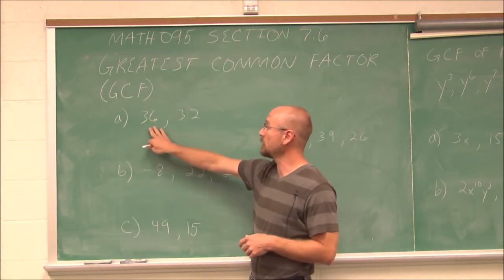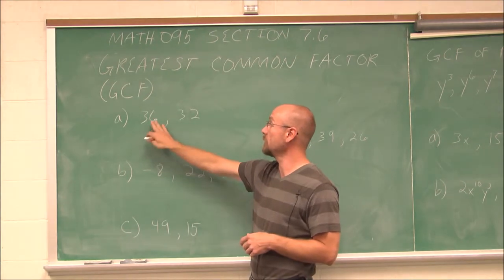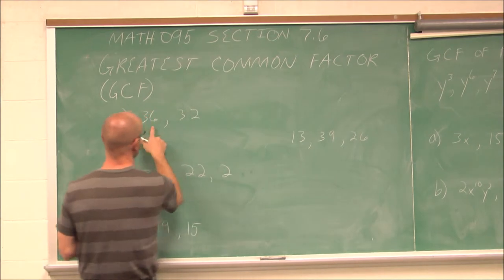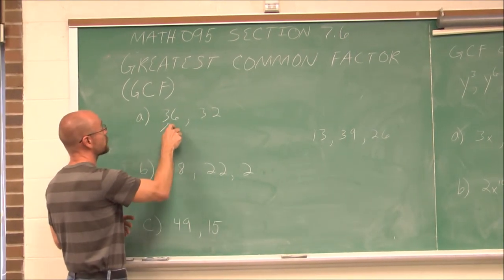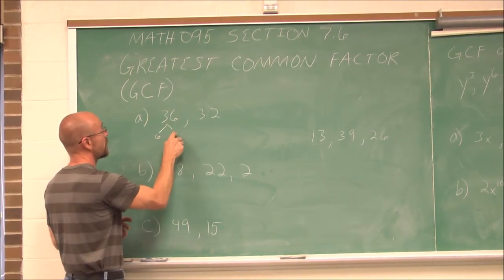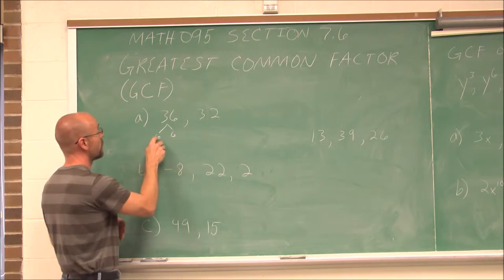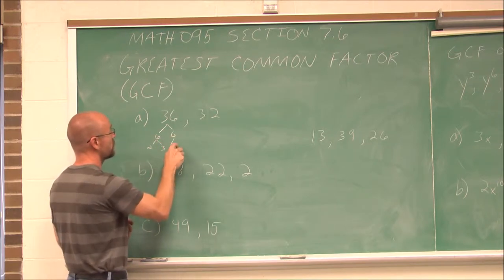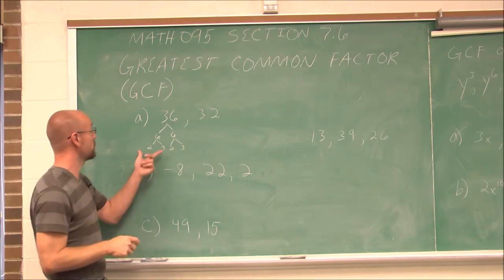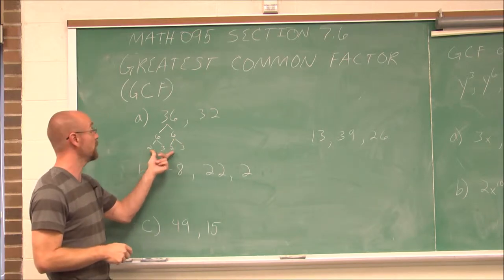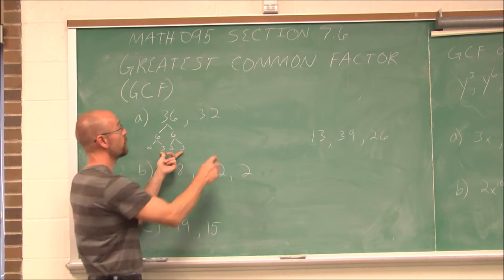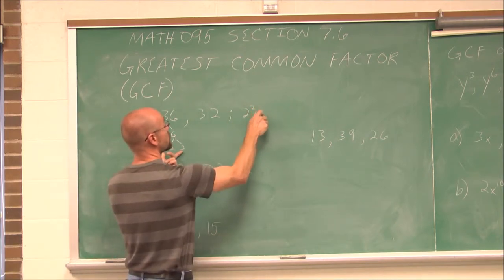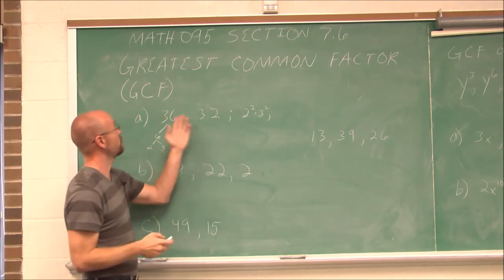If we look at the first example, we have 36 and 32. I'm going to do a factorization — maybe a factor tree. I know 36 is 6 times 6, and 6 is 2 times 3. So I can see I have two factors of 2 and two factors of 3, so I can write it as 2 squared times 3 squared, which is 36.